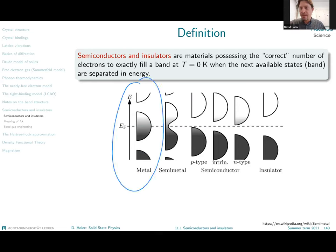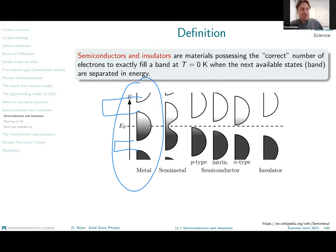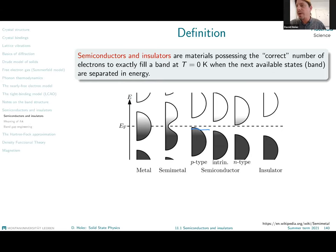There are plenty of band gaps — even a metal contains a band gap. But in a metal, the band gap is between occupied states or between unoccupied states. Although this terminology is strictly speaking correct, whenever someone speaks about a band gap, what we mean is the energy separation between occupied and unoccupied states: the difference between the highest occupied and the lowest unoccupied states.